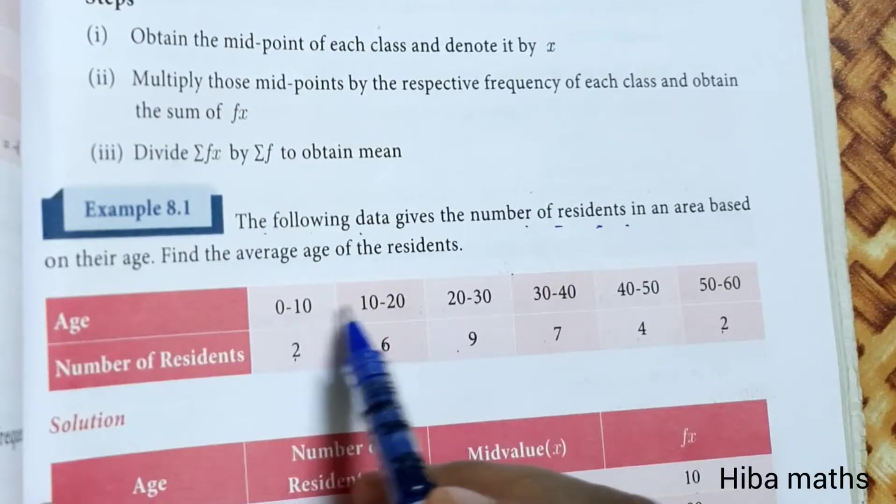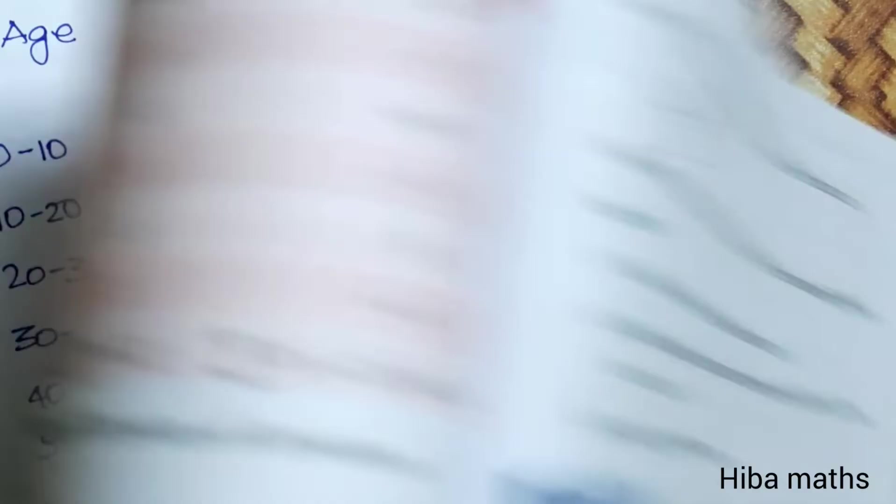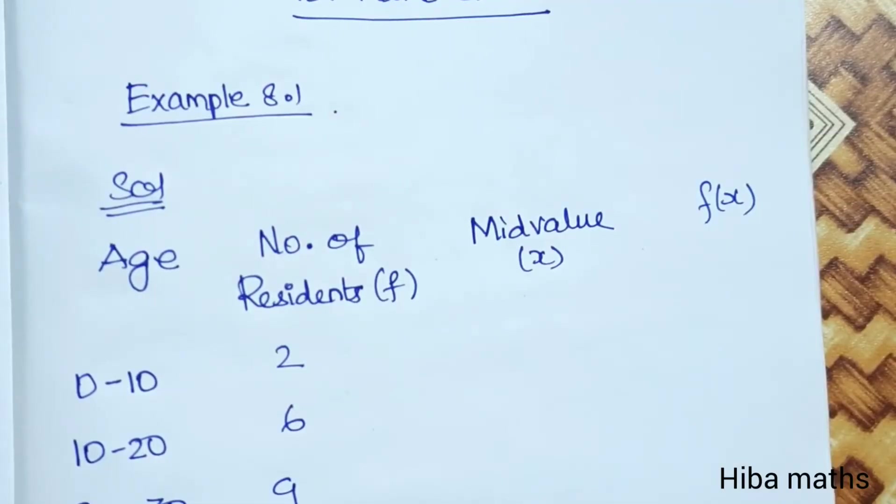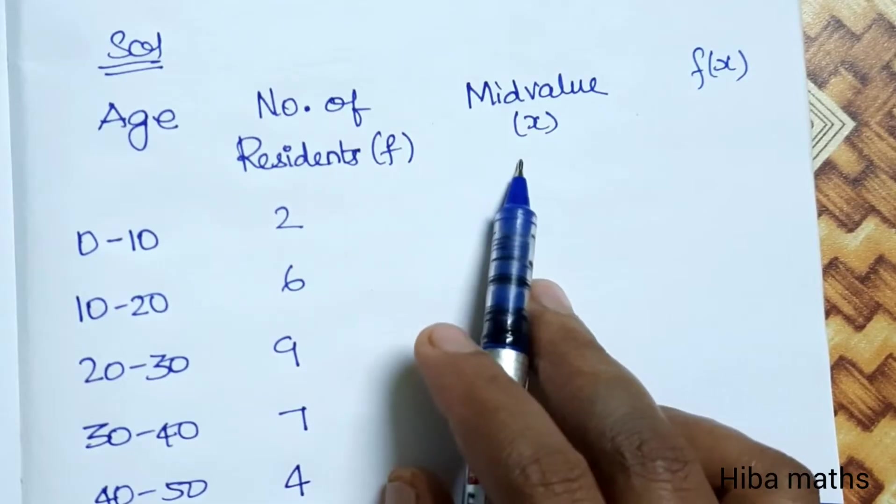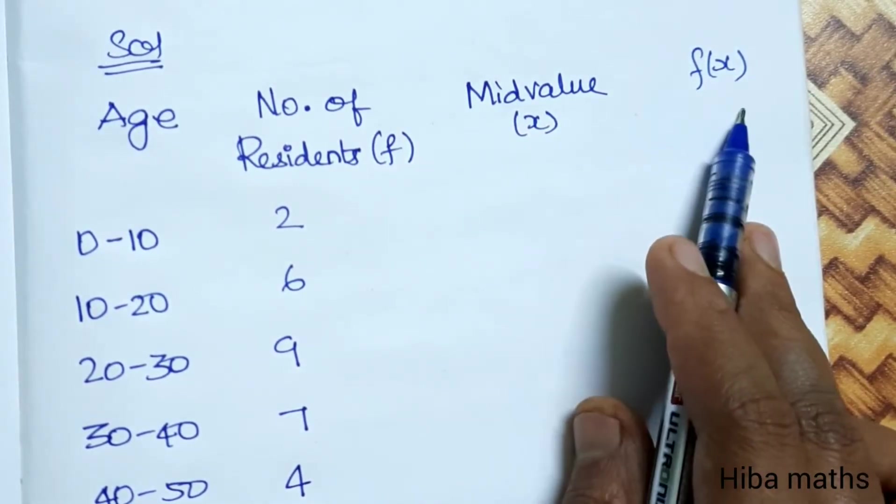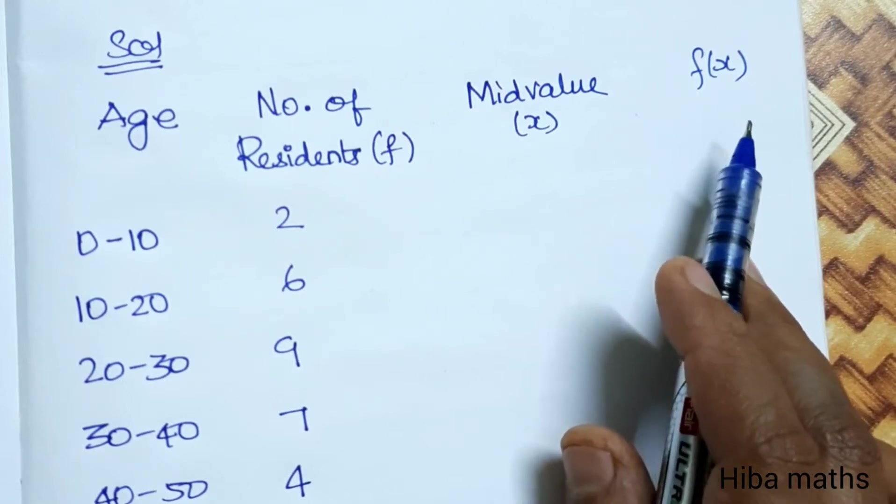First thing we need to check is the class intervals are equal. We need to solve using a table. So table columns here: Age, number of residents f, midvalue x, then f into x.